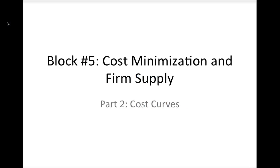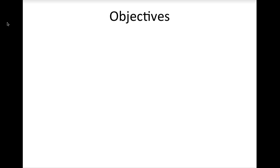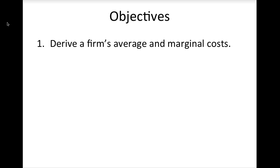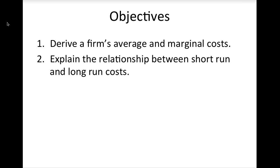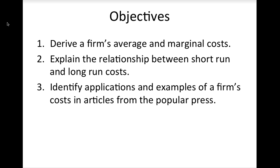In this lesson, we will examine a firm's costs in more detail. A detailed study of a firm's costs will help us to better analyze a firm's choices about how much output to produce. By the end of this lesson, you should be able to derive a firm's average and marginal costs and explain the relationship between short-run and long-run costs. You should also be able to identify applications and examples of a firm's costs in articles from the popular press.